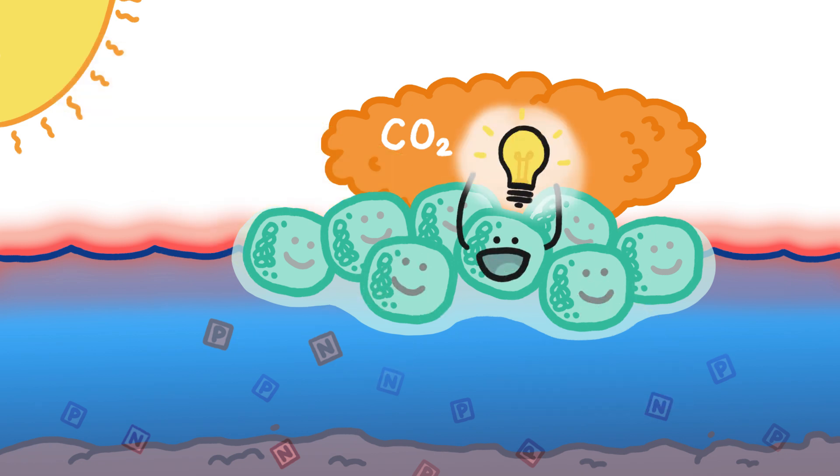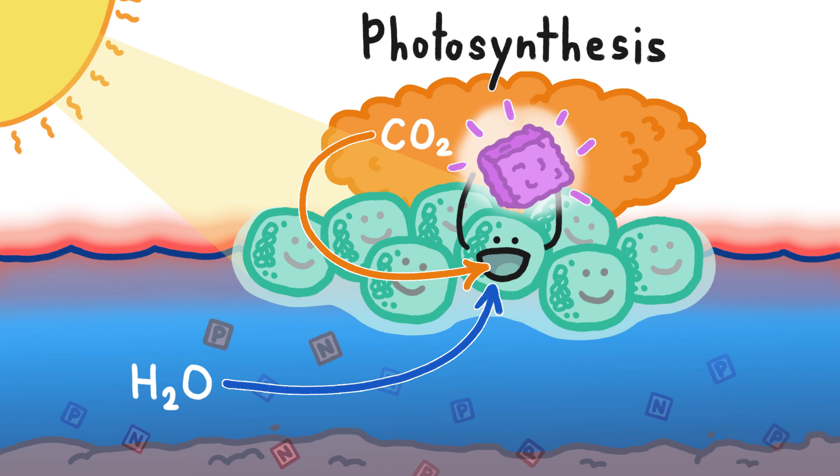And in one of the most profound steps in all of evolution, they figured out how to combine carbon dioxide with water to make tasty sugar, a process called photosynthesis.